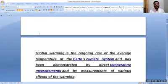Global warming is the ongoing rise of the average temperature of the earth's climate system and has been demonstrated by direct temperature measurements and by measurements of various effects of the warming.